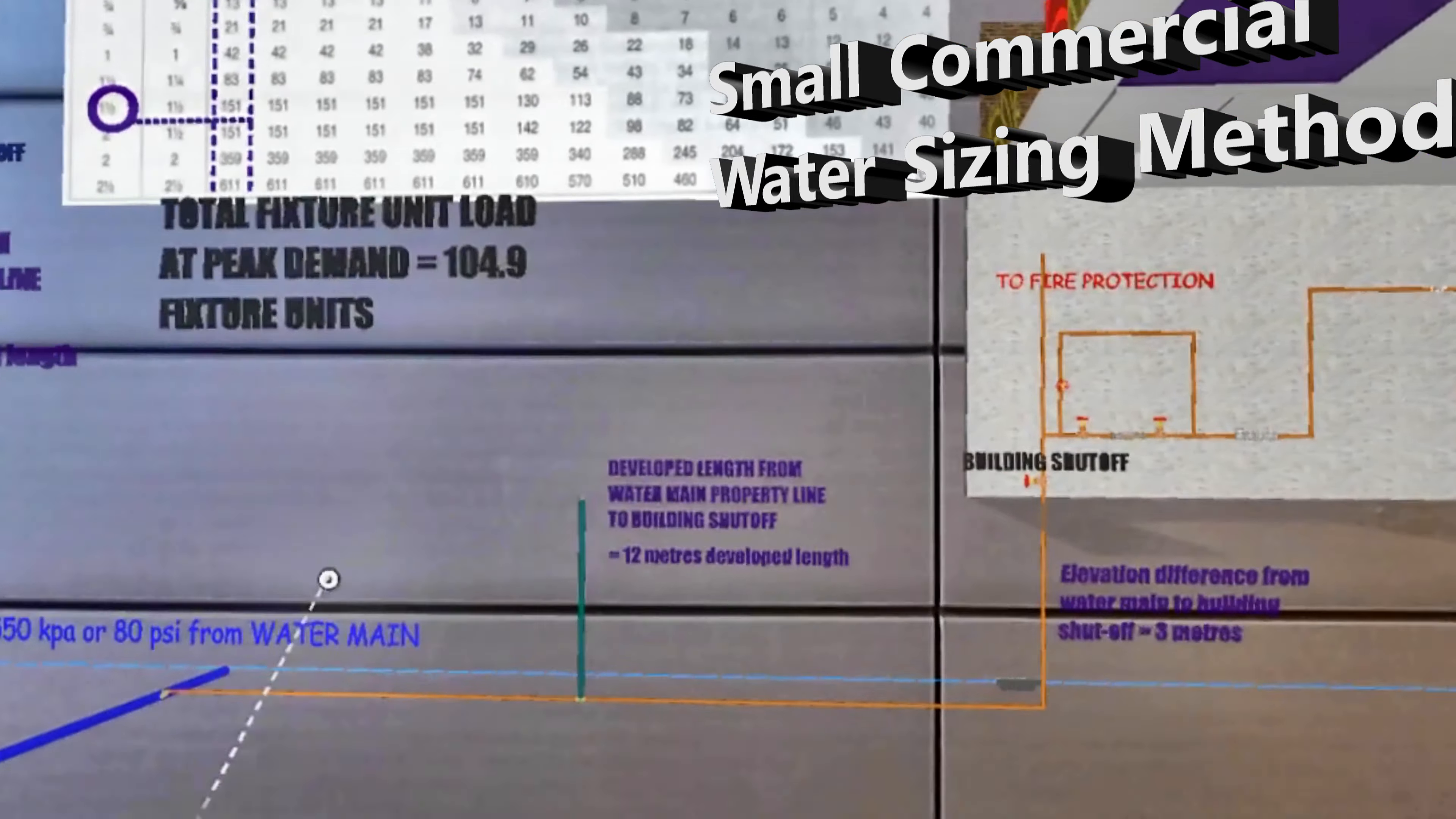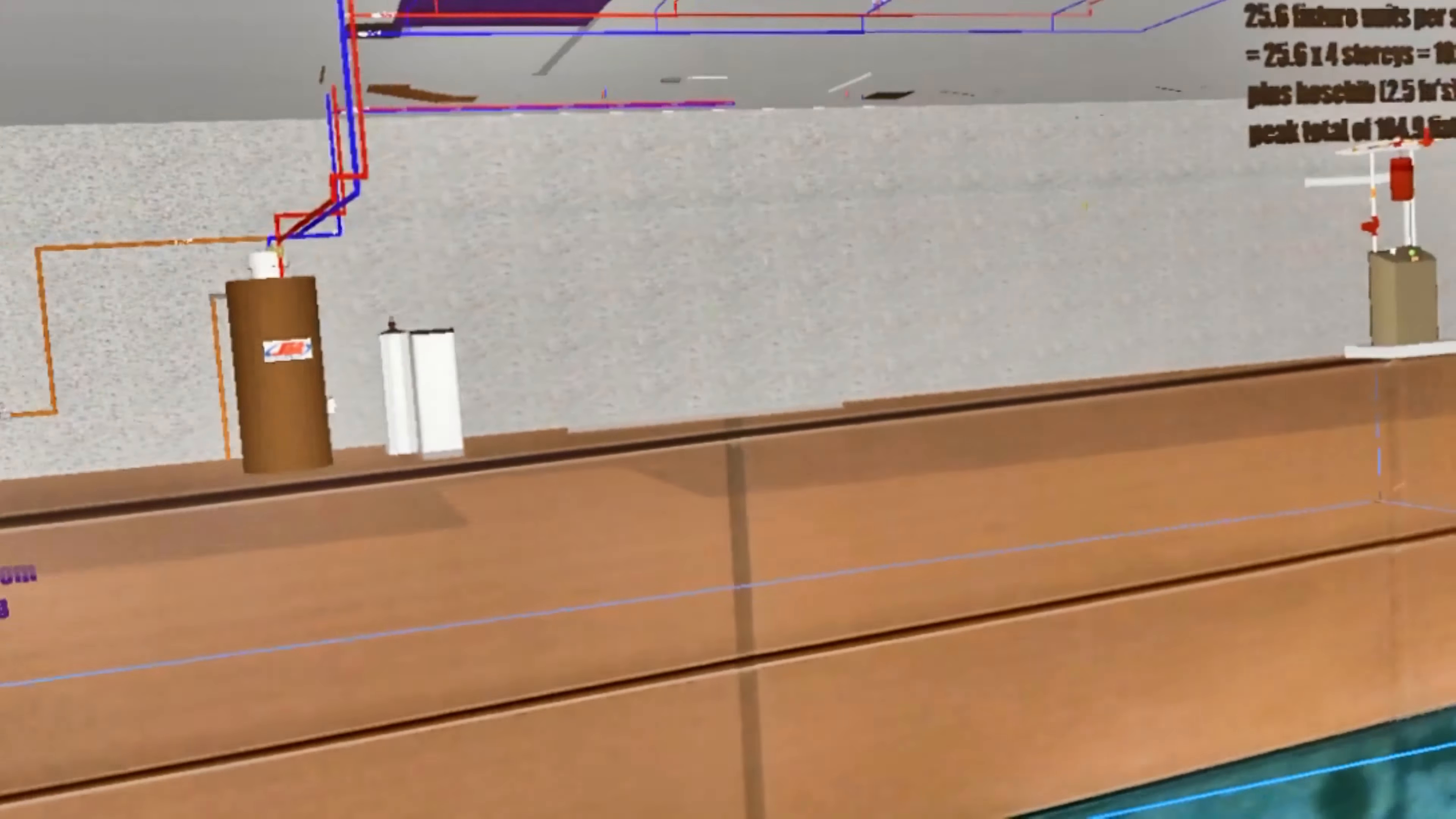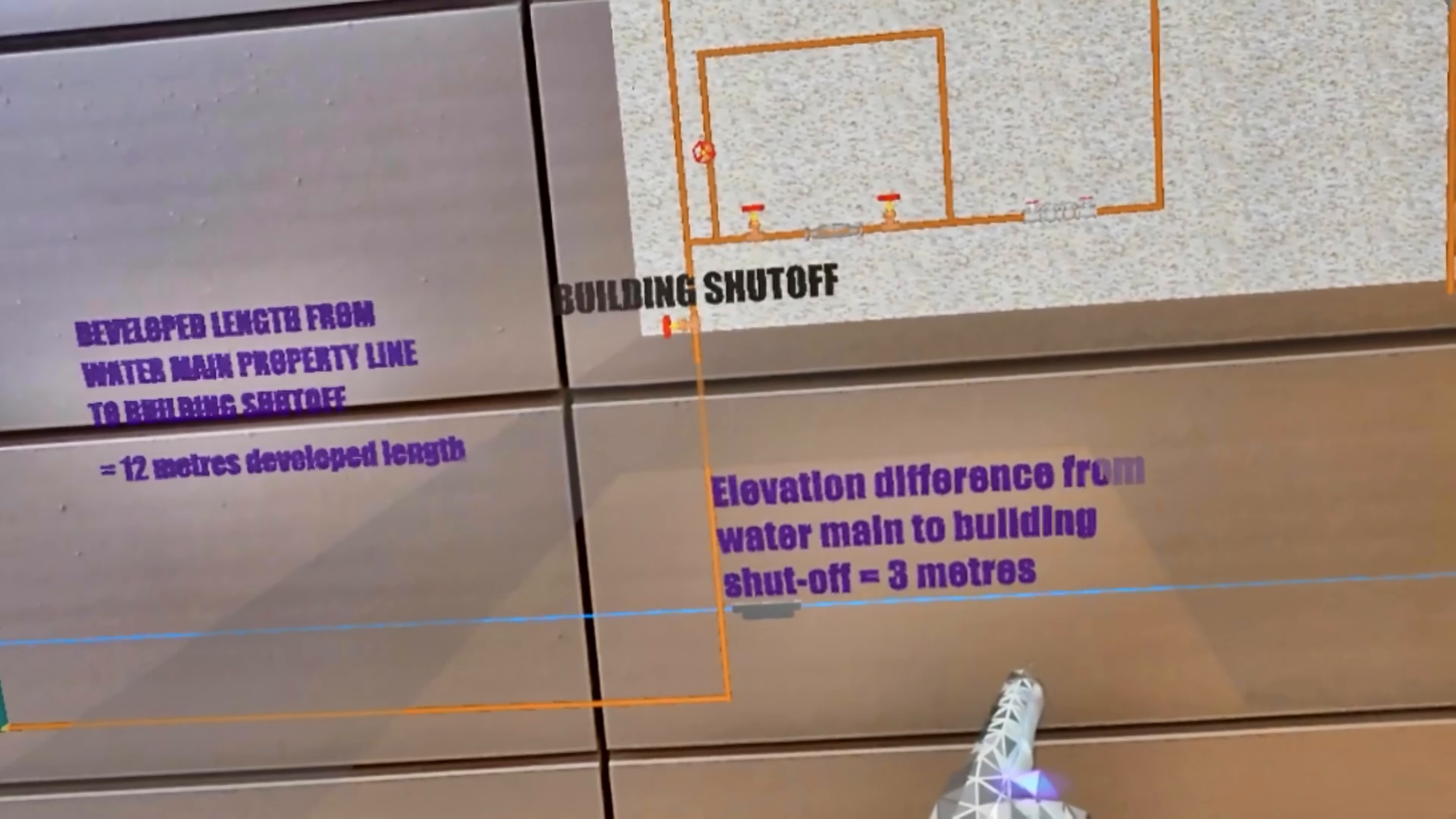The water service is right here from the curb cock right here to the building shutoff, and that is 12 meters long. So you use the 12 meters developed length, then you use the total fixture unit load of the building which I've already figured out is 104.9 fixture units. And then the last thing is you just need the elevation difference from the water service to the main shutoff, which is 3 meters.